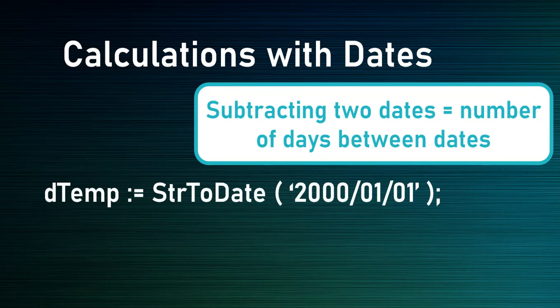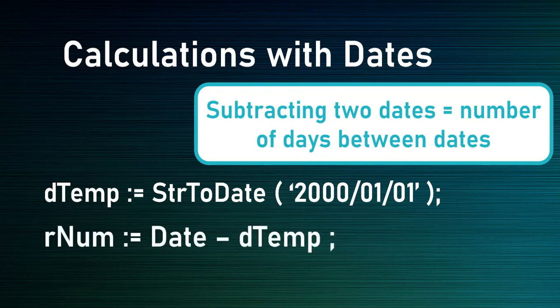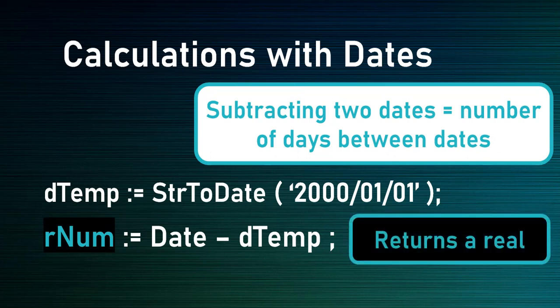Let's say we've got a date set to the 1st of January 2000, and we wanted to find how many days there are between that date and today. We would use the Date function — which gives the current date — and minus the earlier date, because today would be a bigger value than the date in 2000. That returns the number of days. Note that it stores into a real value, not an integer. If you want an integer, you'll have to use Round or Trunc to convert it.